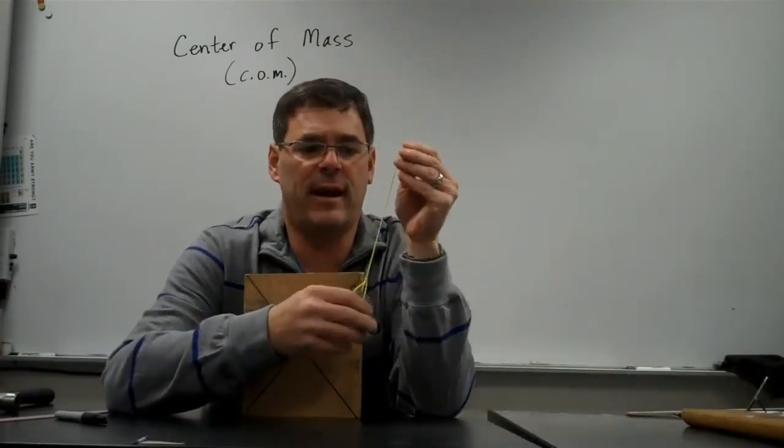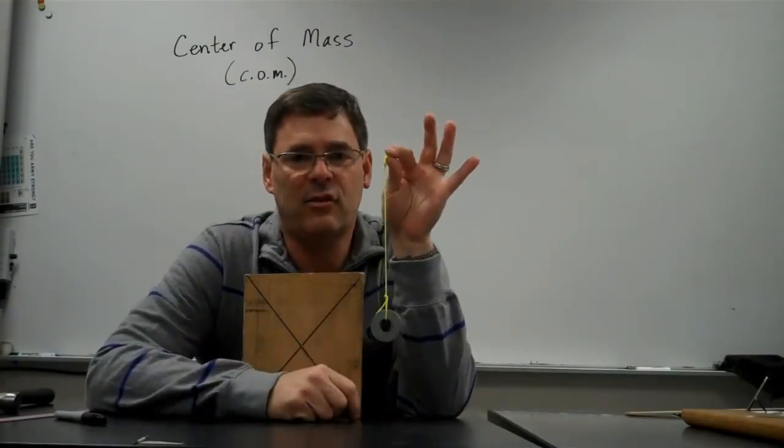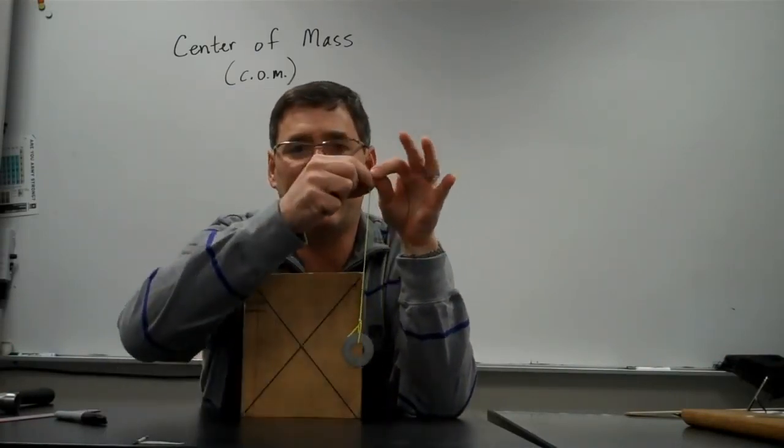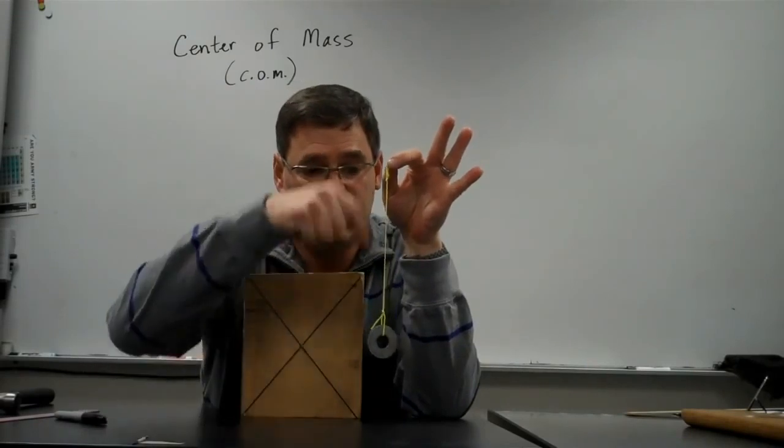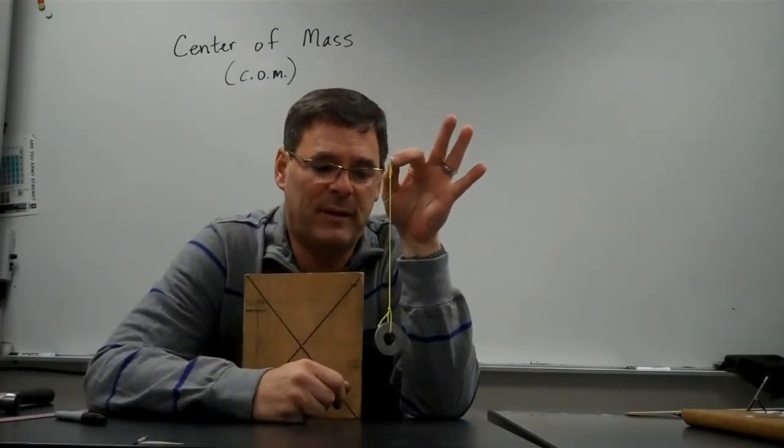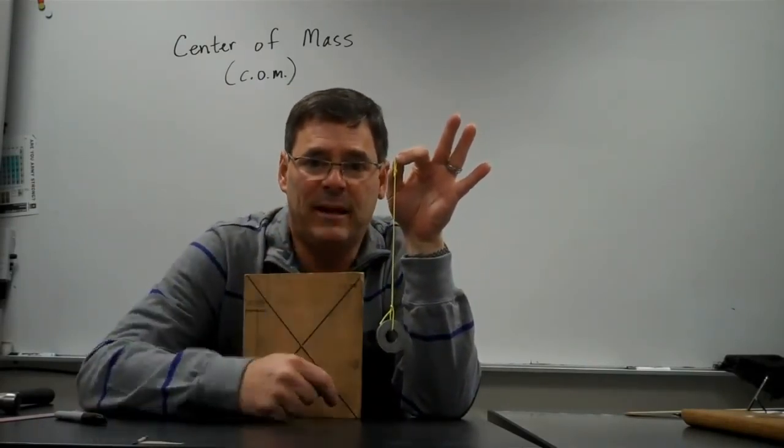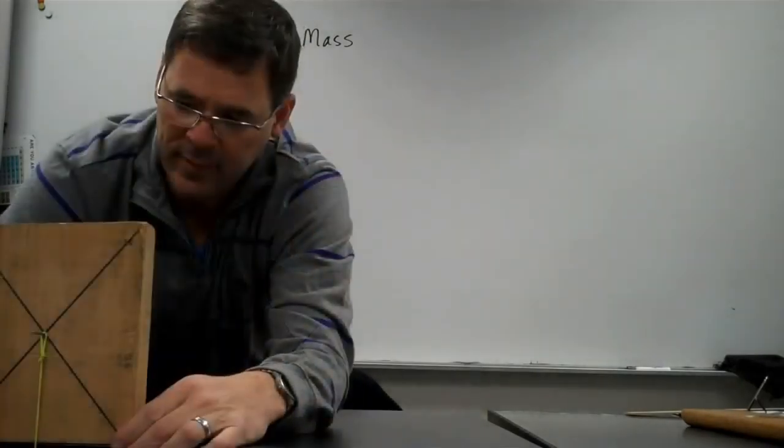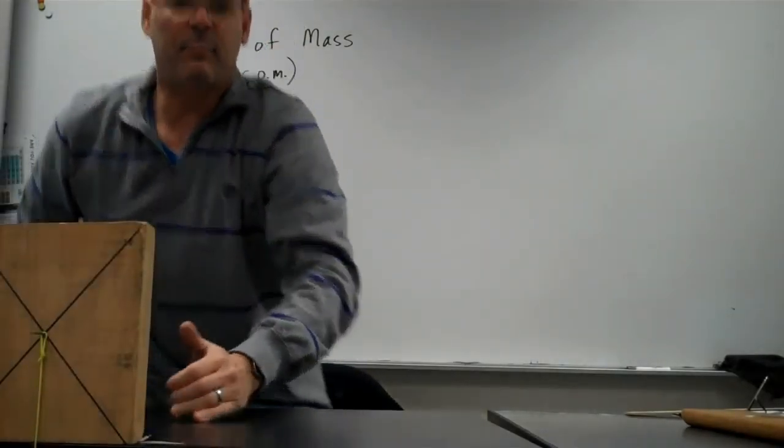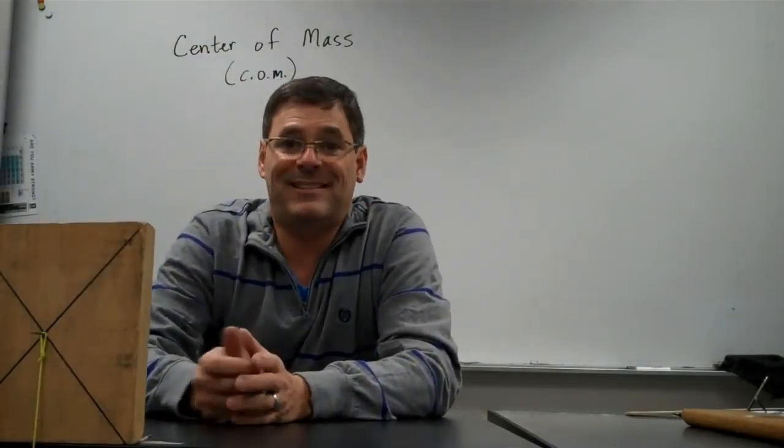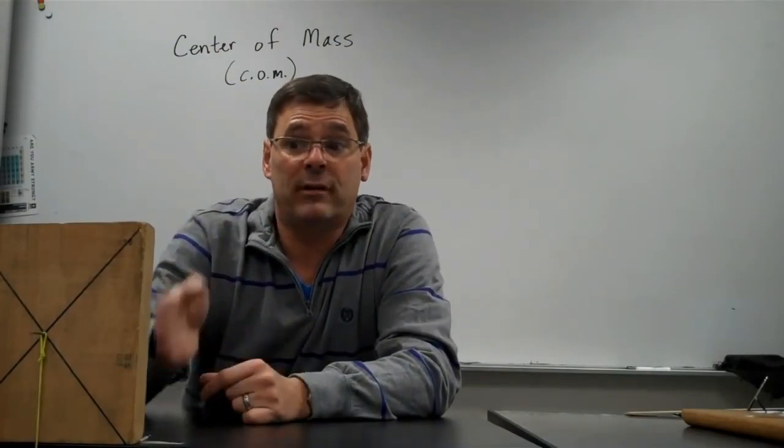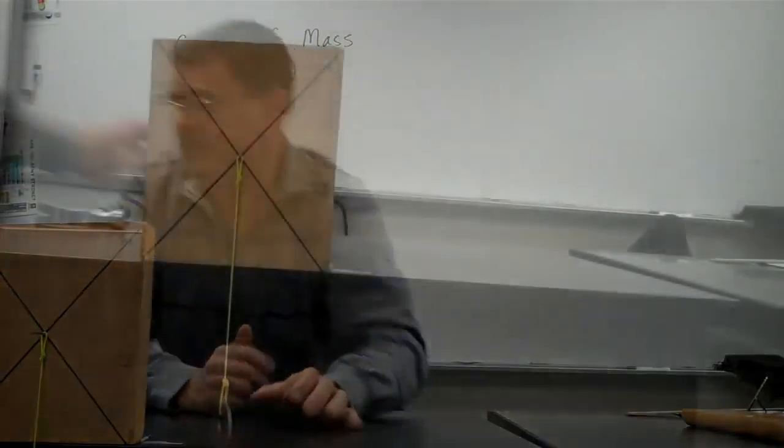Now I'm going to take this string that has a weight on it, this is called a plumb bob. Anything I hang it from, this will hang straight down of course because of gravity, and that will show me the direction of down. And now I can see the point about which the center of gravity is directly over, right above that yellow piece of string.